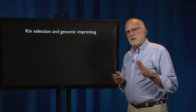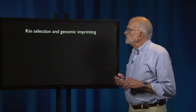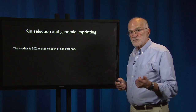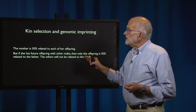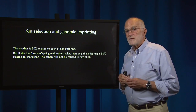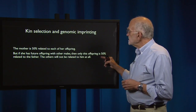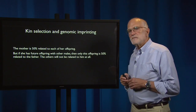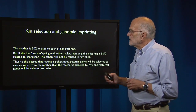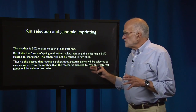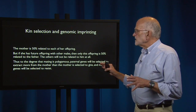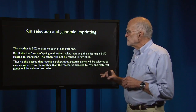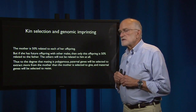There is a connection between kin selection and genomic imprinting. The mother is 50% related to each of her offspring, as we have emphasized. But if she has future offspring with other males, then only this offspring is 50% related to the father — the others will not be related to him at all. Thus, to the degree that mating is polygamous, paternal genes are going to be selected to extract more from the mother than the mother is selected to give, and the maternal genes will be selected to resist.